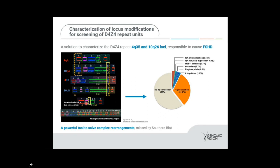Using our genomic Morse code technology, you're able to identify those specific regions of that disease. Furthermore, when there's a proximal deletion in the 4QA, in particular deletion P13E11, we're actually able to see that deletion event taking place by a gap in the genomic Morse code. Our assay doesn't just provide the presence or absence of FSHD, but it characterizes what is going on at the genetic level in subjects presented for FSHD screening. This is a powerful tool to solve complex rearrangements often missed by technologies such as Southern Blot.